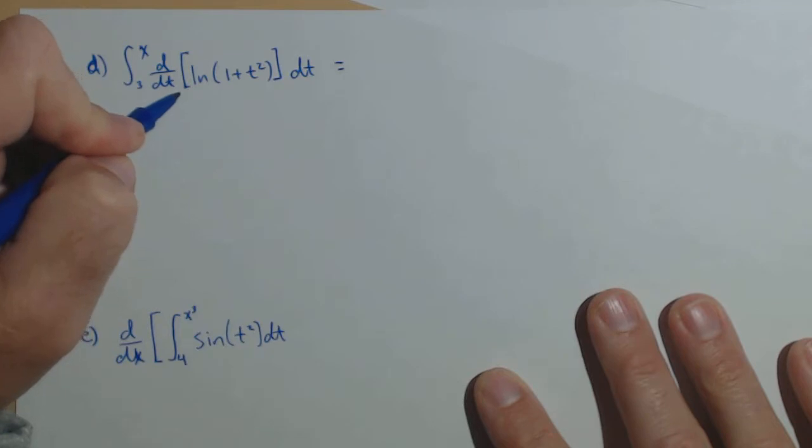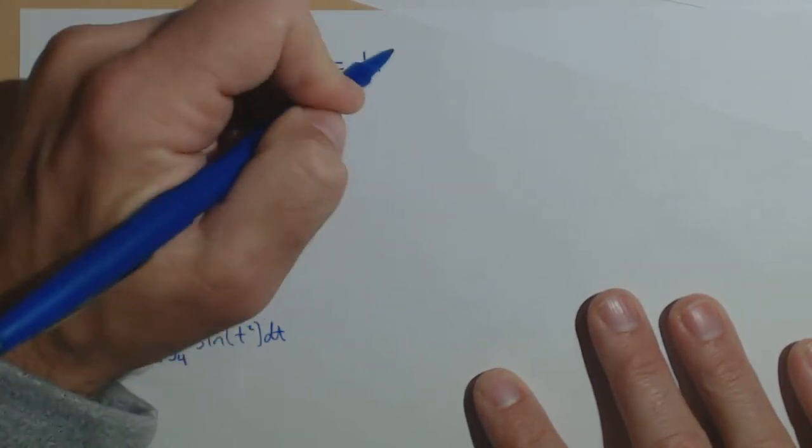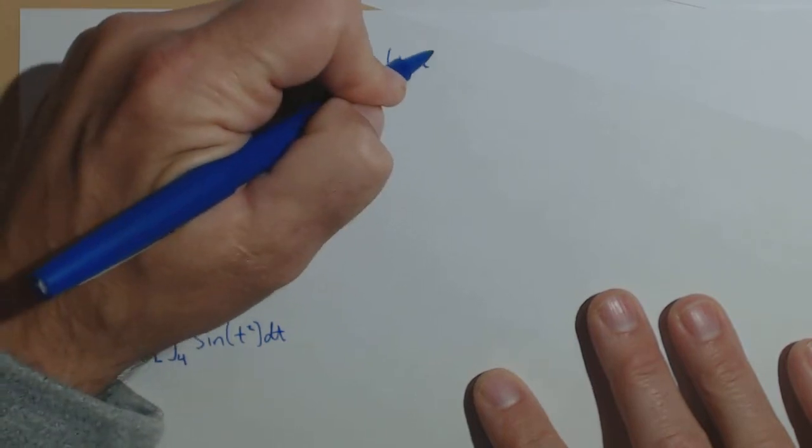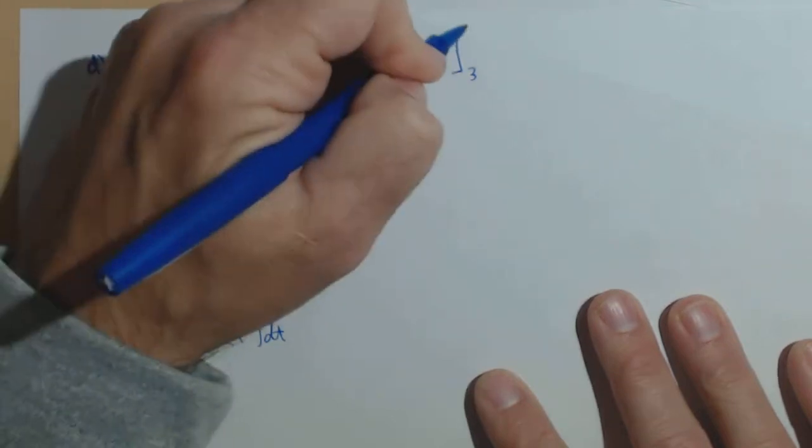So, again, the anti-derivative of this integrand is ln of one plus t squared, and we're gonna go from three to x.